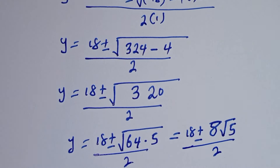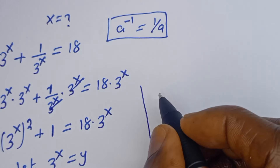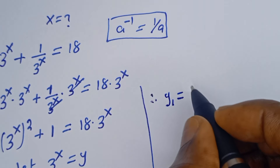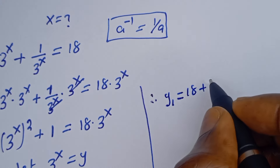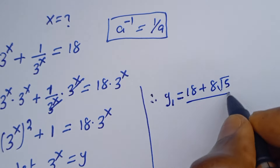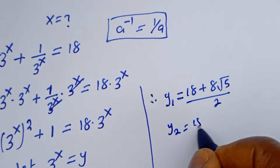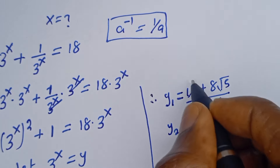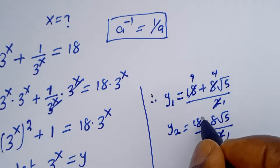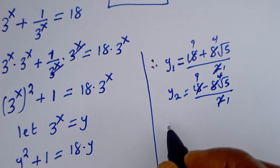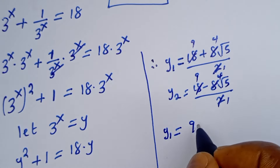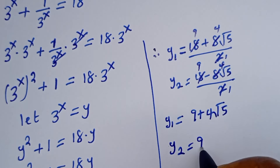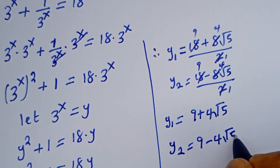This is over 2 as well. Dividing through by 2: y1 is equal to 18 plus 8 root 5 over 2, and y2 is equal to 18 minus 8 root 5 over 2. Simplifying by dividing each term by 2, y1 is equal to 9 plus 4 root 5, and y2 is equal to 9 minus 4 root 5.